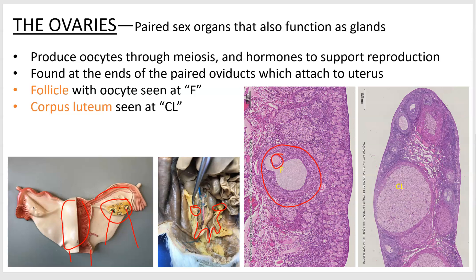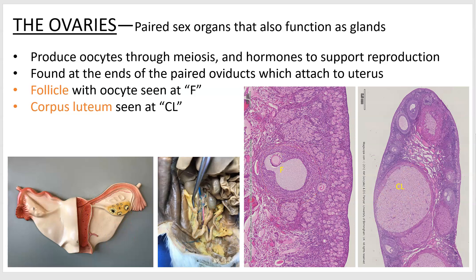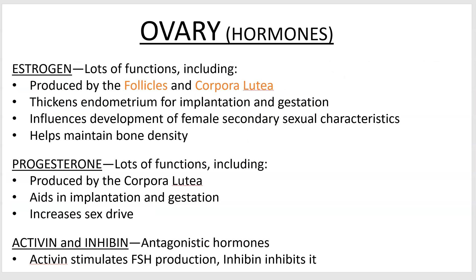Once that oocyte is ovulated, the follicle kind of fills in with a semi-solid mass - that's what this structure is right here. It looks kind of open, similar to the follicle, but it's not. This is what you call a corpus luteum. Corpus luteum means 'luteal body' or 'yellow body,' and it is the structure that results after the follicle collapses. It's going to be the major producer of progesterone, while the follicle produces estrogen, and the corpus luteum produces both.